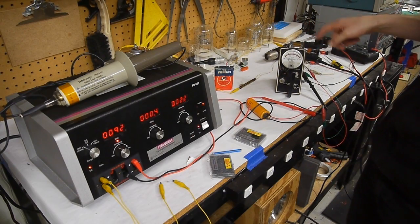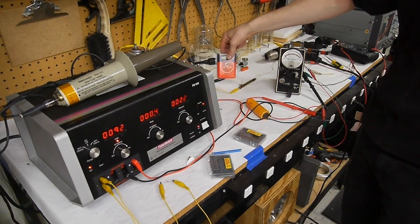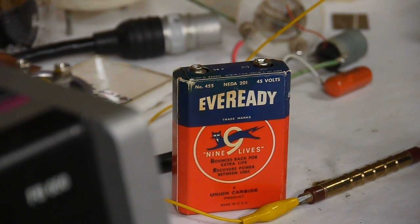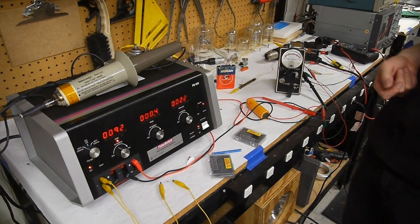So this Geiger counter was originally battery powered, it was portable, and it was powered by two of these B batteries at 45 volts apiece and two D cells at 1.5 volts apiece.